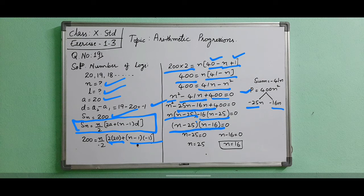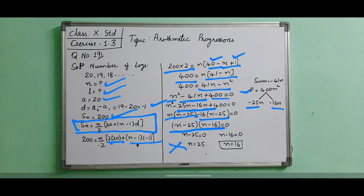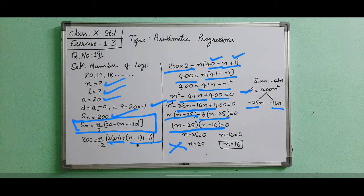So n minus 25 equals 0 as well as n minus 16 equals 0. n values are 25 and 16. Why we are not considering n as 25 because it is given clearly that it is having 20 logs at the beginning and when 20 logs are there, the maximum number of rows will be 20 only.